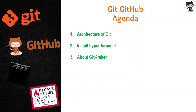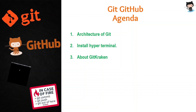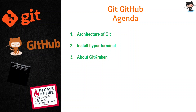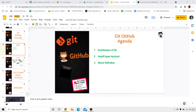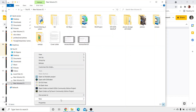Before we start the architecture of Git, in the previous tutorial we learned how to actually commit a file, how to push a particular file into our GitHub repository. So just have a quick demo of it. What I'm going to do right now is create a file in F drive.